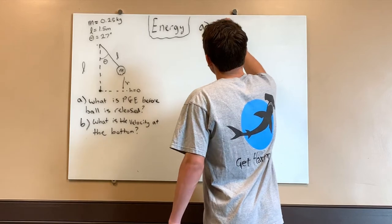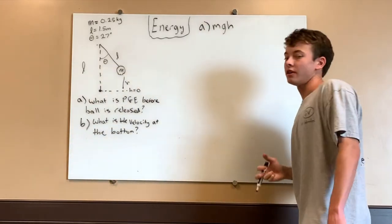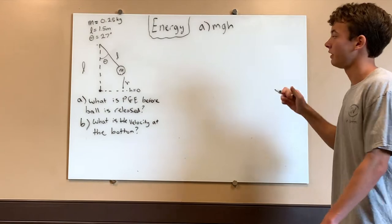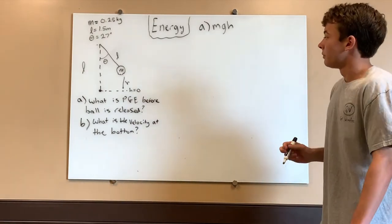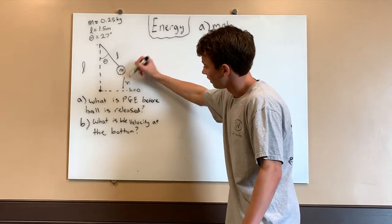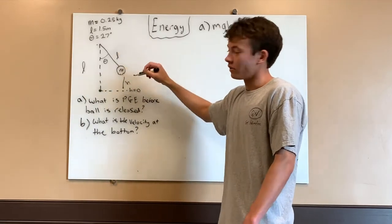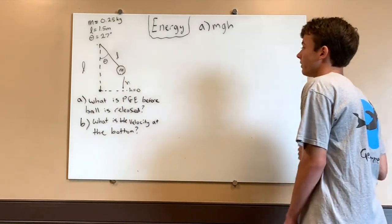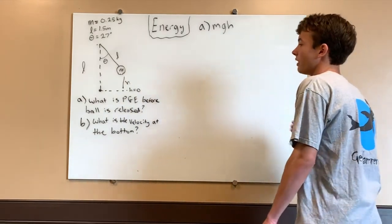We know that the gravitational potential energy is equal to mgh — mass times gravity times the height that your mass is resting at. But there's a problem here: we don't know this height. We're not given that. We're given the string length but we're not given the height that the mass is above the ground, so we've got to solve for that trigonometrically.